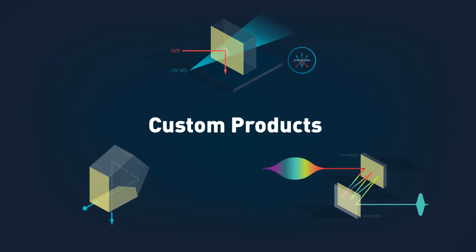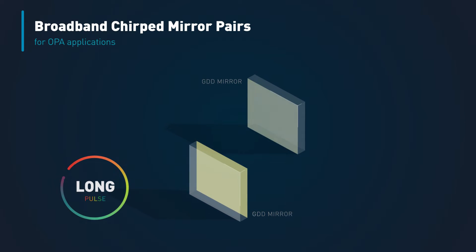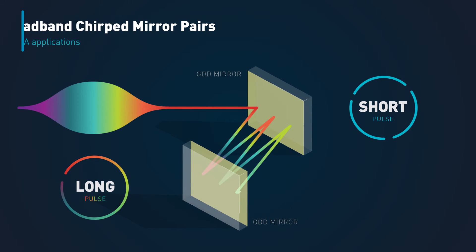We specialize in unique and complex custom products. At the request of Light Conversion Limited, we developed broadband chirped mirror pairs with pulse compression, covering the 600-900 nm range with optimal GDD characteristics and high reflectivity.